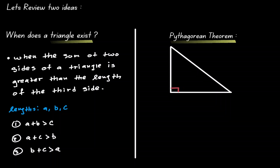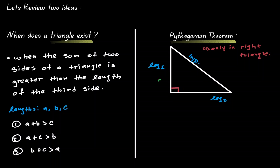Remember that the Pythagorean Theorem is only true in a right triangle. The side that is opposite the 90-degree angle we call the hypotenuse of the right triangle, and the other two sides we call the legs. To simplify this, let's call leg 1 A, leg 2 B, and the hypotenuse C. Based on this labeling, we can say that A squared plus B squared is equal to C squared.